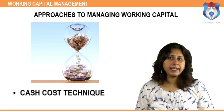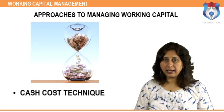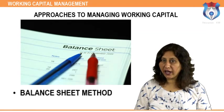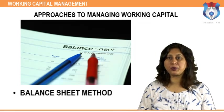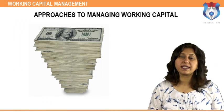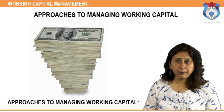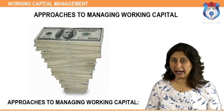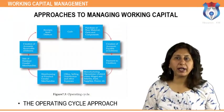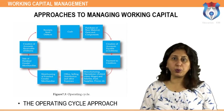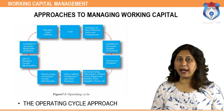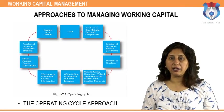Cash cost technique: working capital forecast is done on a cost basis, taking P&L items into account. Balance sheet method: working capital forecast is done based on various assets and liabilities, taking balance sheet items into account. Two approaches are generally followed: the conventional approach, which implies managing individual components of working capital efficiently so that there are neither idle funds nor paucity of funds; and the operating cycle approach, which views working capital as a function of the volume of operating expenses and determines it by the duration and operating expenses of the cycle.